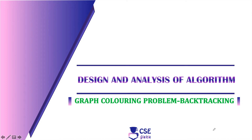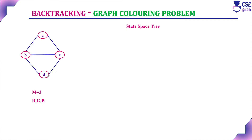Welcome to CSE Guru. In this session, we will discuss one more example to implement the graph coloring problem using backtracking technique. This is the given graph and here M is equal to 3. They have given 3 colors, and using these 3 colors, we have to construct the state space tree to implement graph coloring problem using backtracking technique.